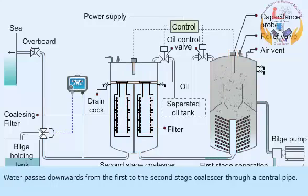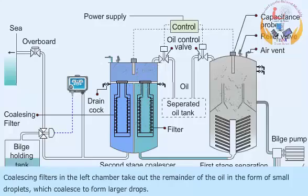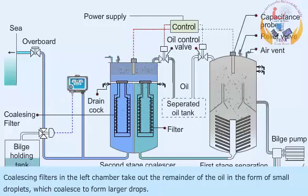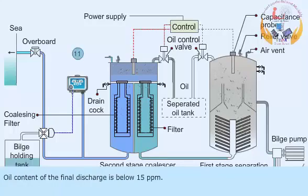Water passes downwards from the first to the second stage coalescer through a central pipe. The filter in the right chamber removes solids and some oil. Coalescing filters in the left chamber take out the remainder of the oil in the form of small droplets, which coalesce to form larger drops. These rise to the oil collecting space.